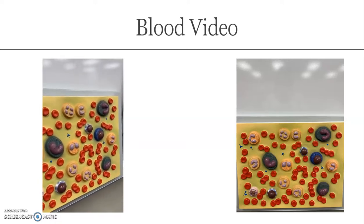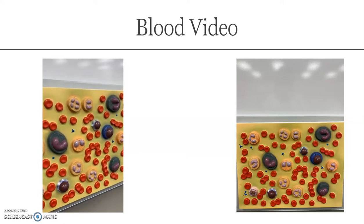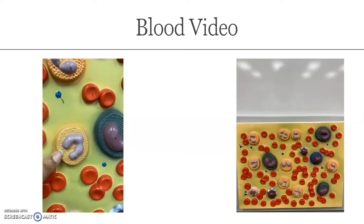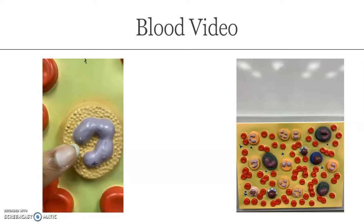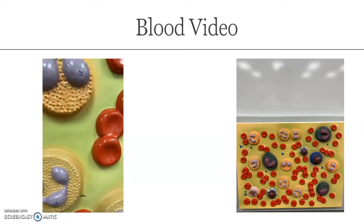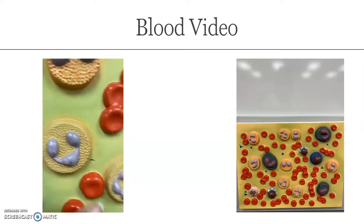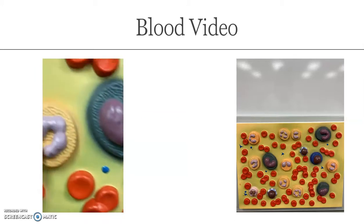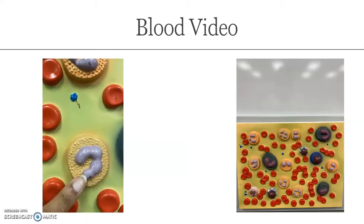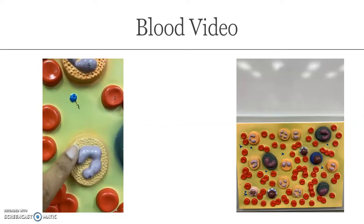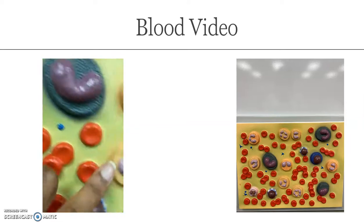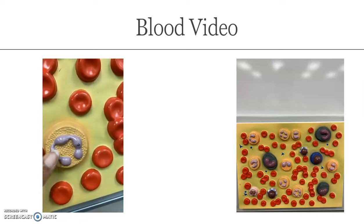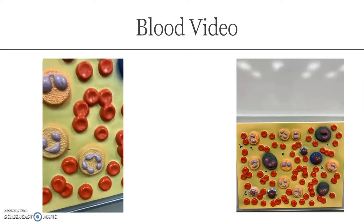The most abundant white blood cells will be your neutrophils. This is a neutrophil here, and we have several on the model. I know that it's a neutrophil because it has many lobes on the nucleus. So this is a five-lobed nucleus, this is a three-lobed nucleus, and this is a five-lobed nucleus found in our neutrophil.